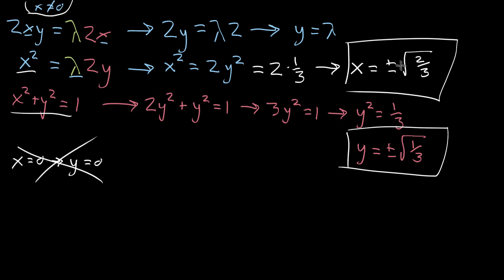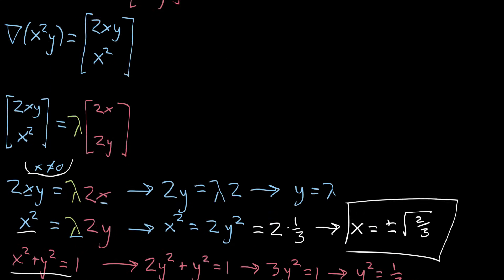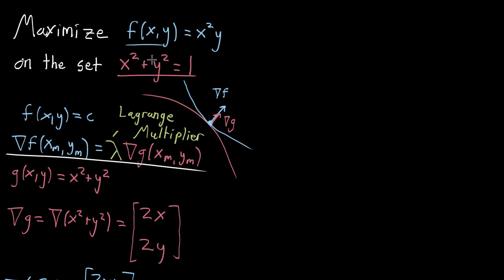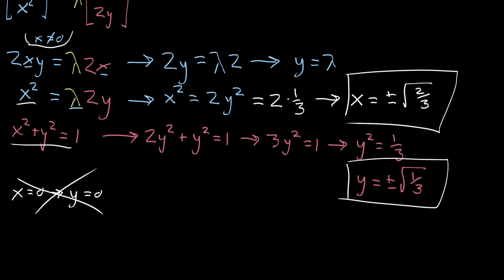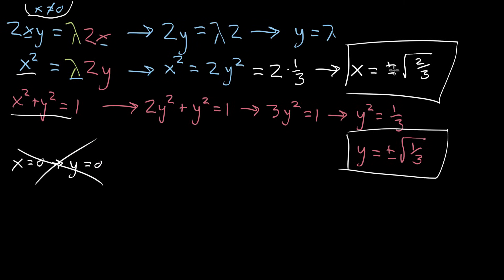So this right here gives us four possible solutions, four possible values for x and y that satisfy this constraint and which potentially maximize this. And remember, when I say potentially maximize, the whole idea of this Lagrange multiplier is that we were looking for where there's a point of tangency between the contour lines. So just to make it explicit, the four points that we're dealing with,